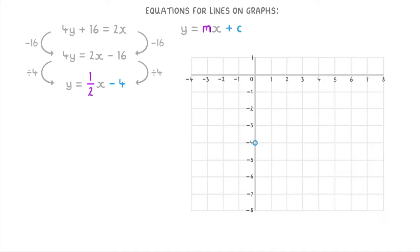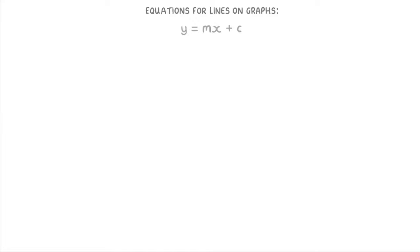And also that m is one half, so the gradient of the line will be one half. This means that for every one that the line goes across on the x-axis, it's going to go up by one half. So by plotting a couple of points like this, we can see that the line's going to go through all of these points, and so look like this.